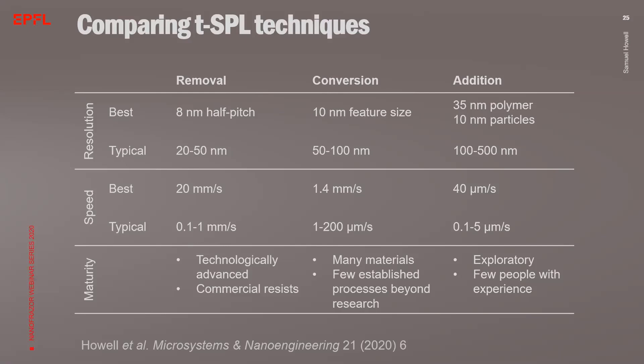In terms of maturity, the most mature technique is removal with a commercial resist PPA, for which many fabrication processes exist and also the commercial resist is available. For conversion, many materials have been converted in the literature by TSPL, but only few established processes exist beyond research in universities. Addition of material is still in a very exploratory phase with only few people that master this technique.